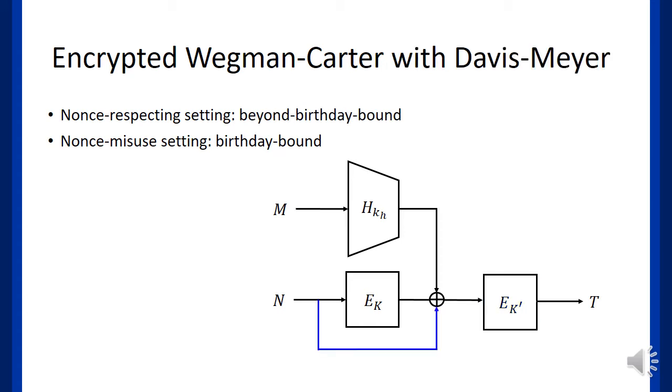With this idea, in Crypto 2016, Cogliati and Seurin proposed a new construction called Encrypted Wegman-Carter with Davies-Meyer, or briefly, EWCDM. The only change is adding the nonce in the middle of the construction. However, this modification significantly improved the security bound.